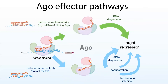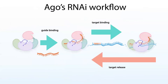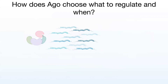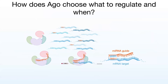Ago can then release the target and do this again. Ago is going to bind to a small RNA, and this is going to program it to seek out and bind to messenger RNA targets that contain at least that seed sequence. However, there are a lot of messenger RNAs out there, so how does Ago choose what to regulate and when? The guide is going to help direct Ago where to go, and the key way it does so is through the seed sequence. Lots of messenger RNAs are actually going to have that seed sequence, which means a single microRNA can target a lot of different targets.